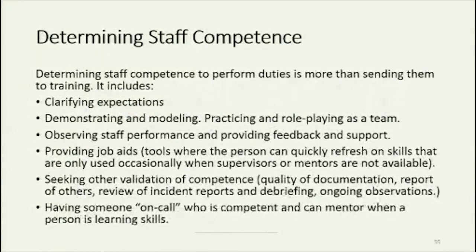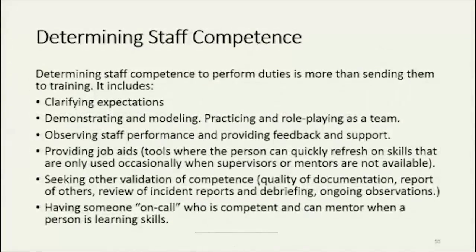The next key piece of this area in the rule is that surrounding the determination of staff competence. License holders must determine that staff competence is up to par to perform duties, and it's more than sending them to training. It includes clarifying expectations, demonstrating and modeling the skills such as practicing and role playing as a team, observing staff performance and providing feedback and support, providing job aids, seeking other validation of competence, and having someone on call who is competent and can mentor when a person is learning skills.